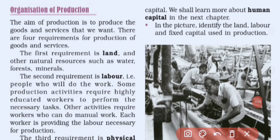Now, the organization of production. The aim of production is to produce goods and services. To continue producing goods and services, we need the four factors of production: land, labor, capital, and human capital.